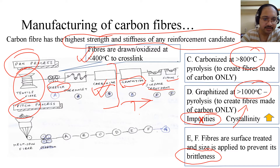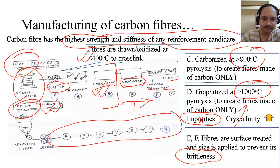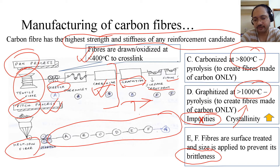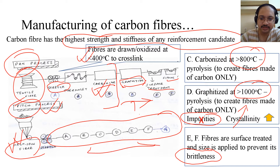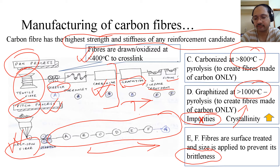Next is the pitch process. All other steps remaining the same, we start with a melt-spun fiber — similar to the melt spinning used in polystyrene fiber production — and then carry out the same process. You should remember the manufacturing of carbon fibers through both these precursors, PAN and pitch.